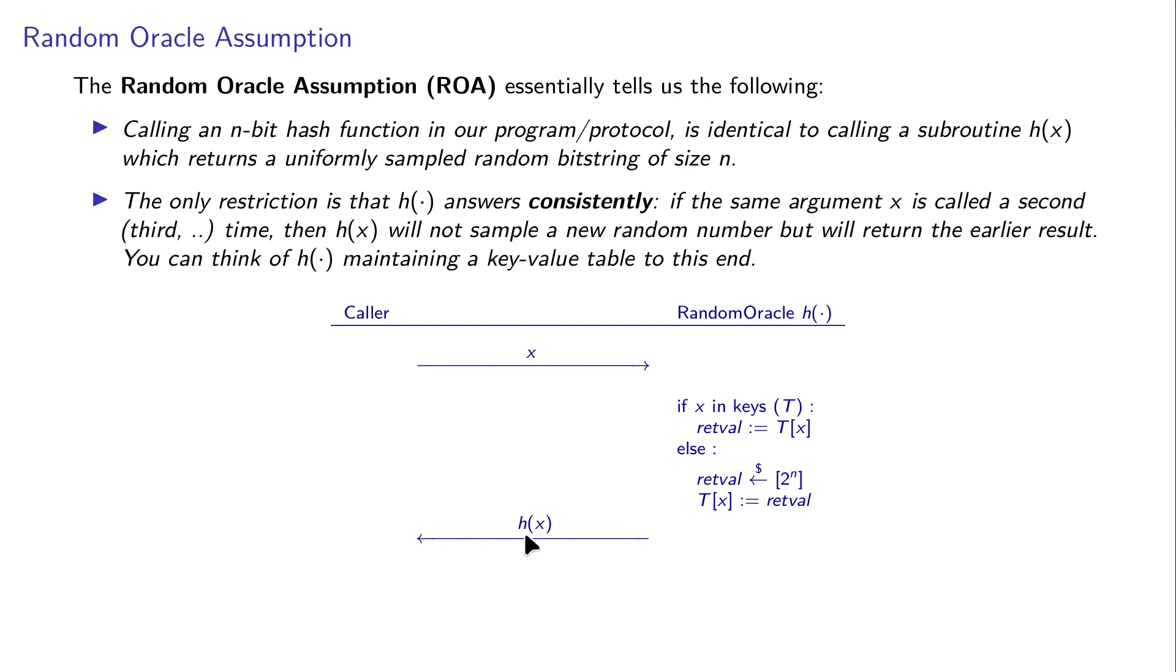However, we make an additional requirement. We want this oracle to be consistent. If the same argument X is called a second time or third, fourth time, then H of X will not sample a new value but it will return the result that was used earlier. So you can think of the oracle here as maintaining a key value table to remember which argument X was used before and to deliver the same function value.